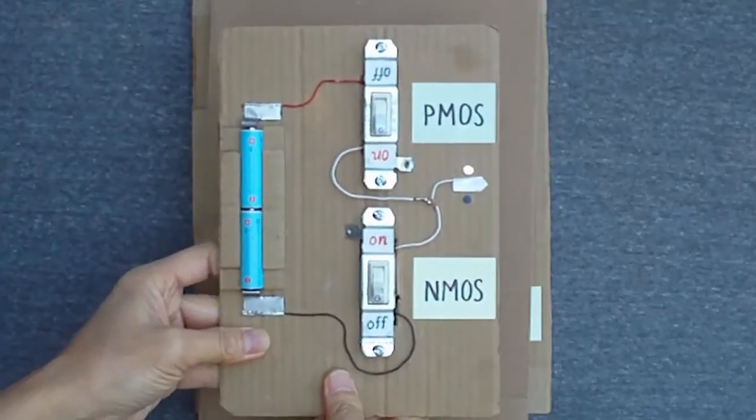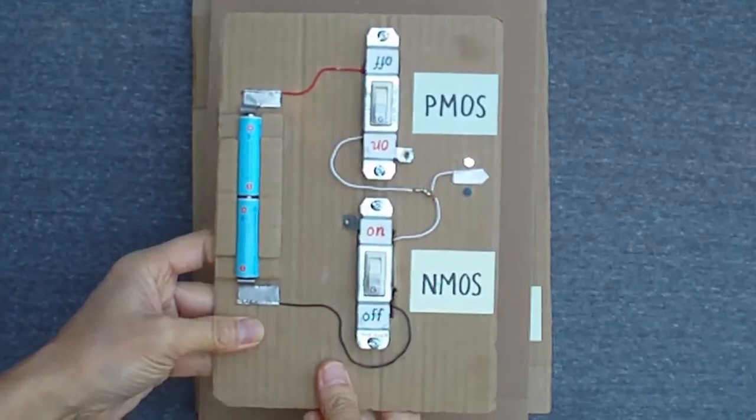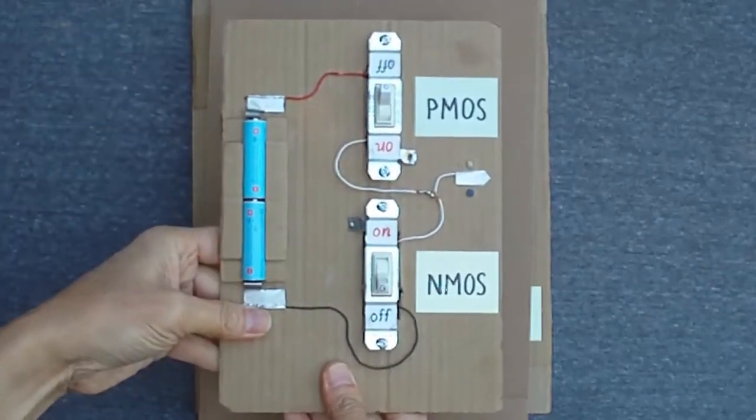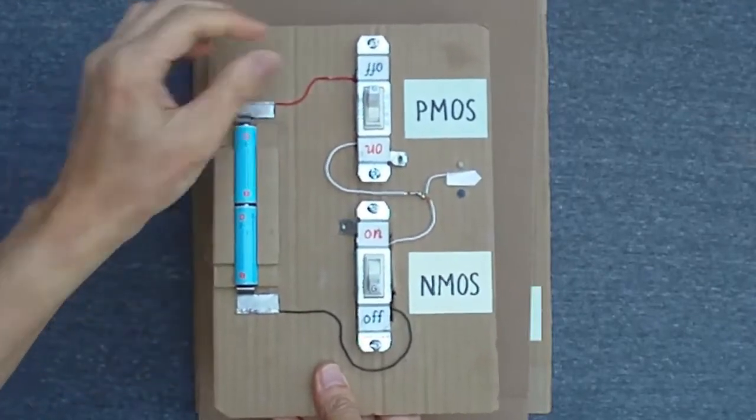Furthermore, in a real CMOS circuit, I need to avoid the situation here with both transistors off and the output floating. To prevent both of these undesirable conditions, I'll connect the two gates together so that they always have the same voltage.